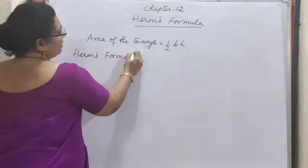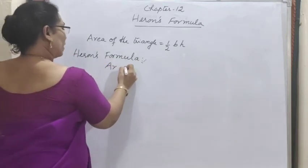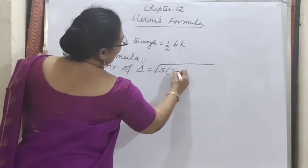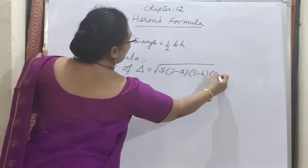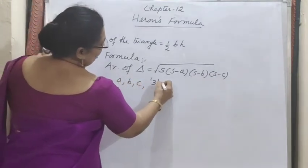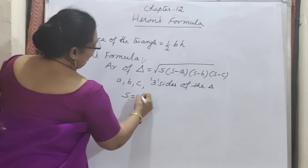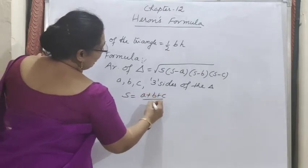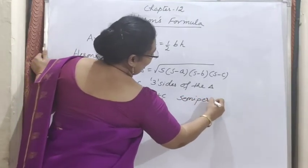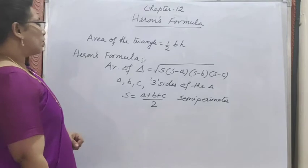So in case the base and height are not given and we have only the three sides, we use Heron's formula to find the area. Heron suggested this formula, so his name is given to it. Heron's formula: area of triangle = √(S·(S−A)·(S−B)·(S−C)), where A, B, C are the three sides of the triangle, and S = (A+B+C)/2, which is the semi-perimeter.